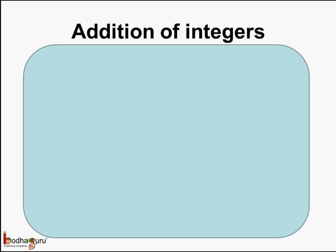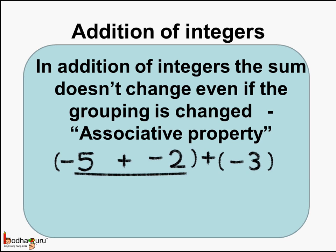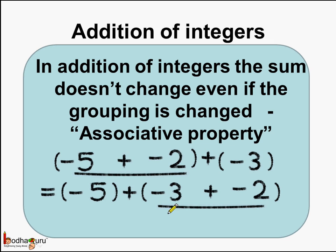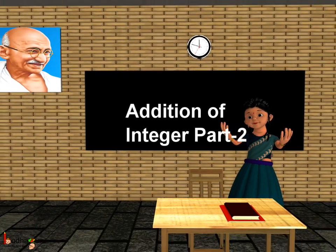So we saw two more properties related to addition of integers. First, in addition of integers the sum doesn't change even if the grouping is changed — this is called the associative property. As we saw, when we added minus 5, minus 2, and minus 3, the grouping changed but the answer in each case was the same, which is minus 10. Next, we saw that zero added to any integer gives the same number — that is, zero is the additive identity of an integer. Bye bye children.